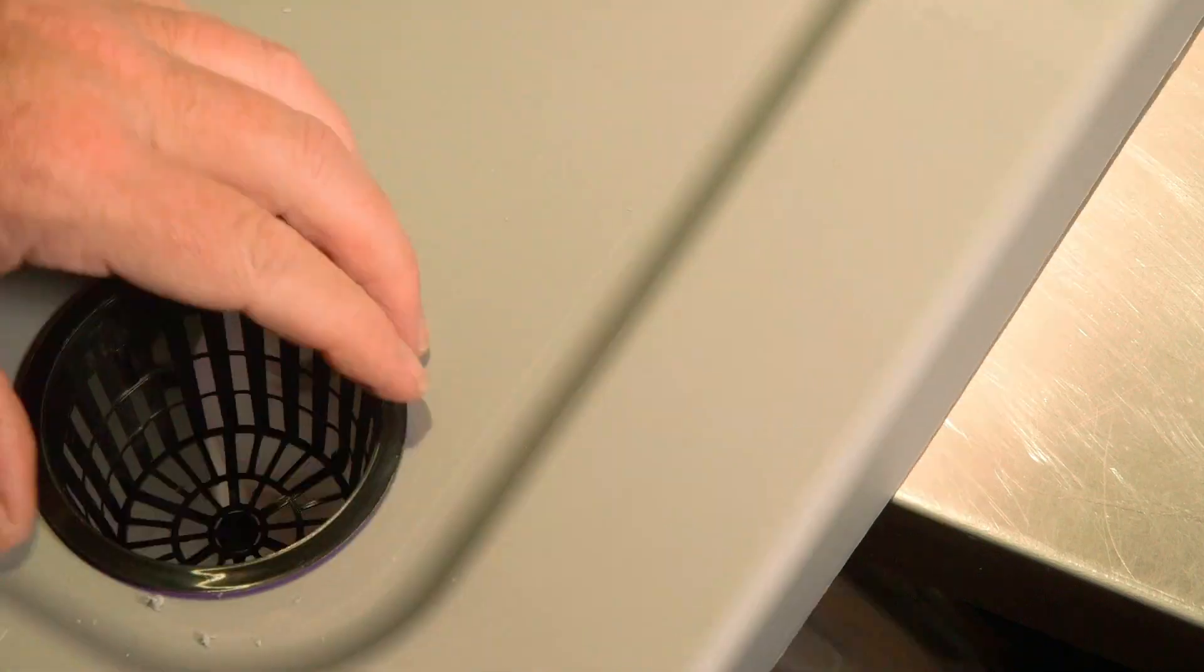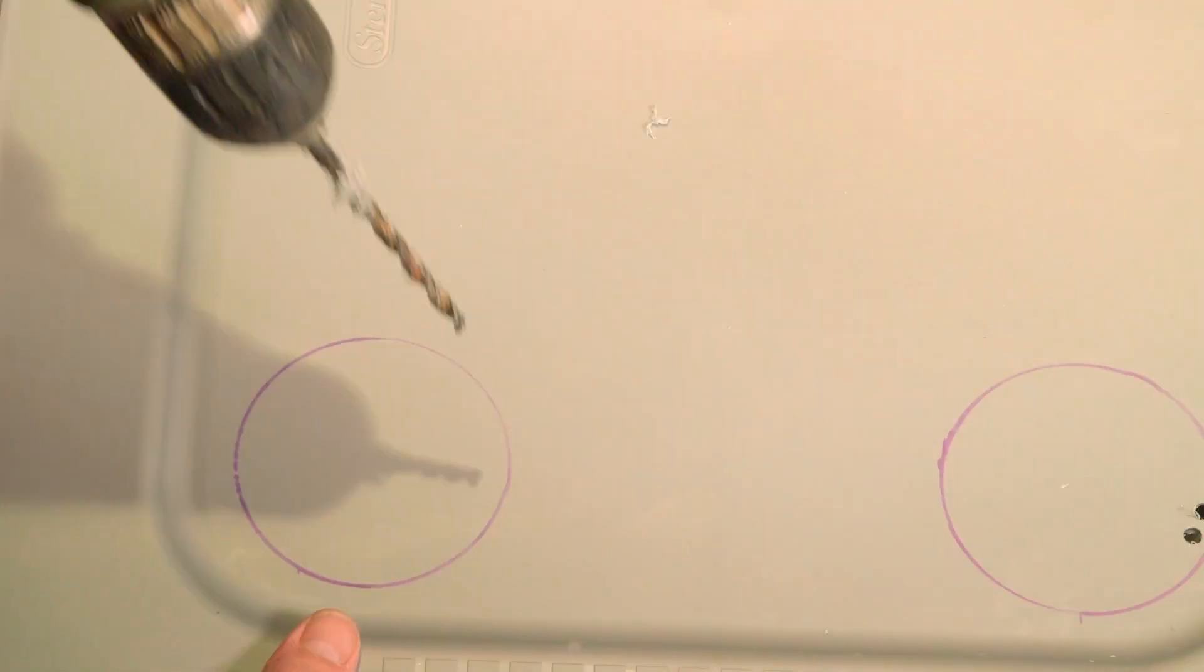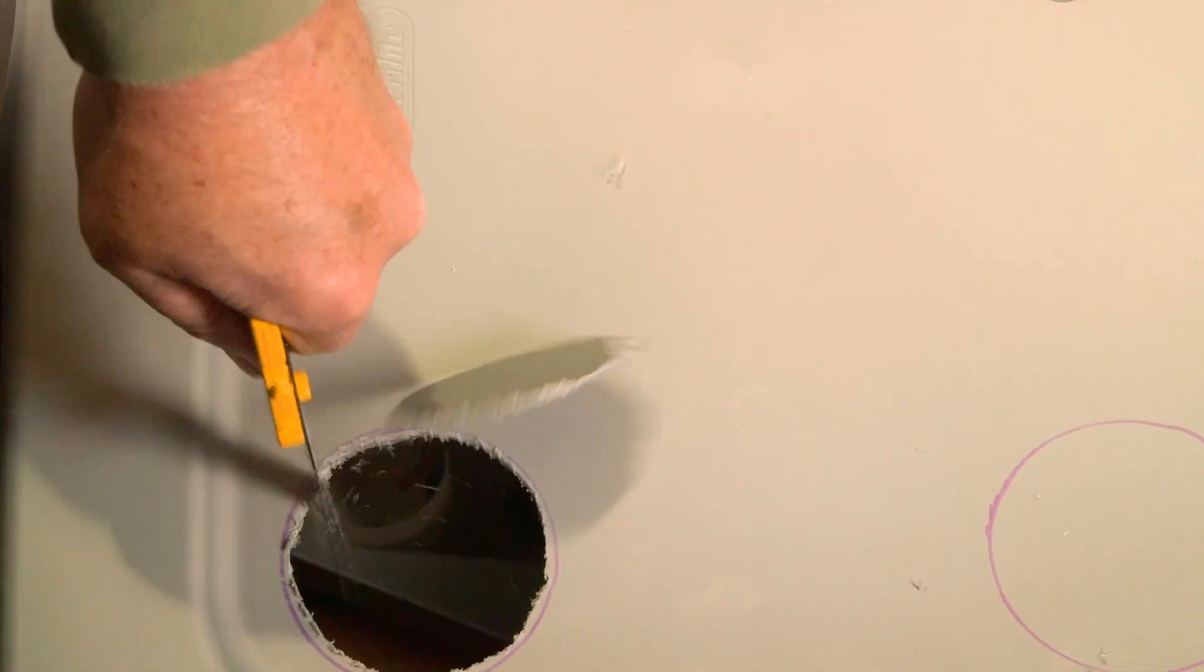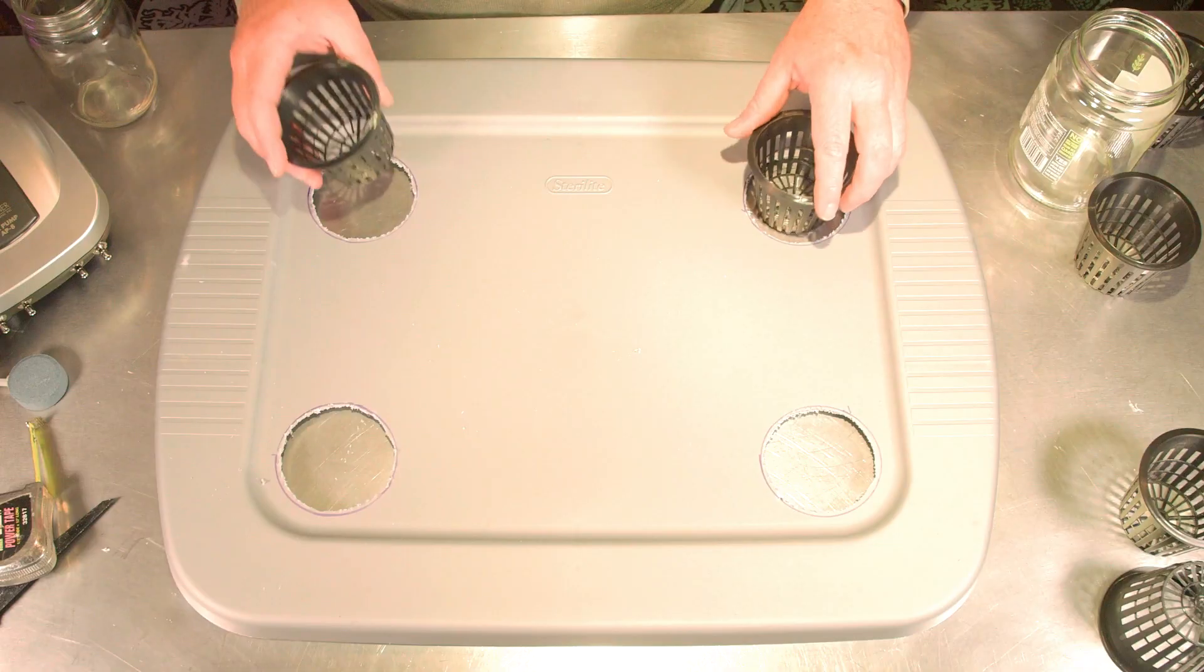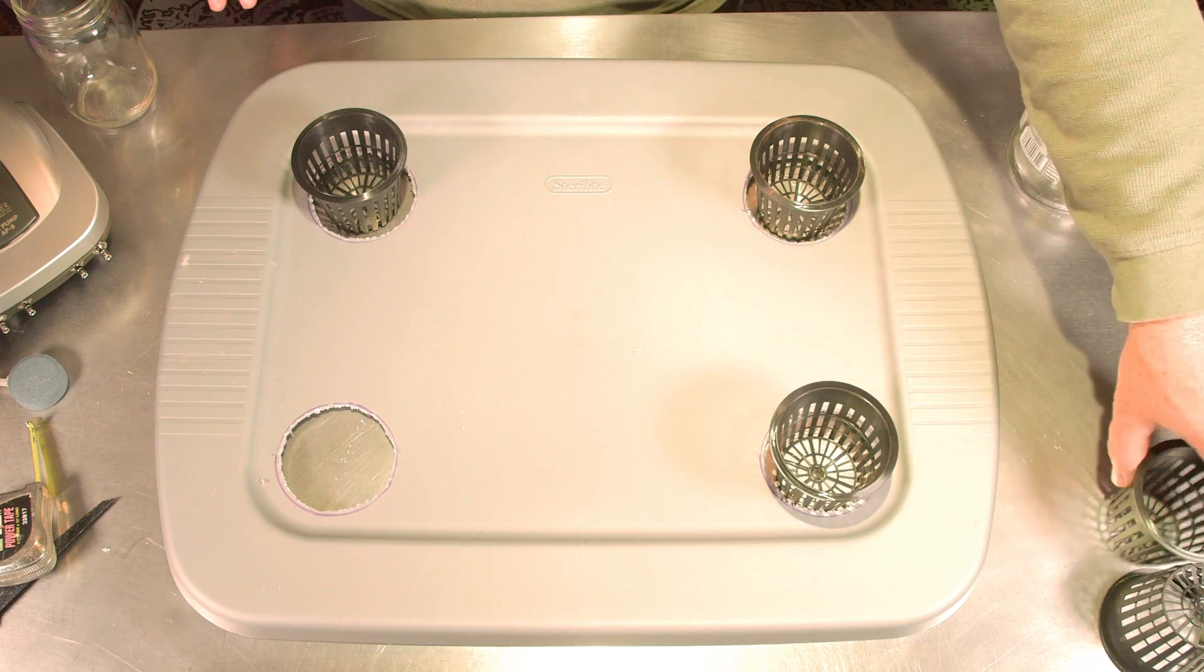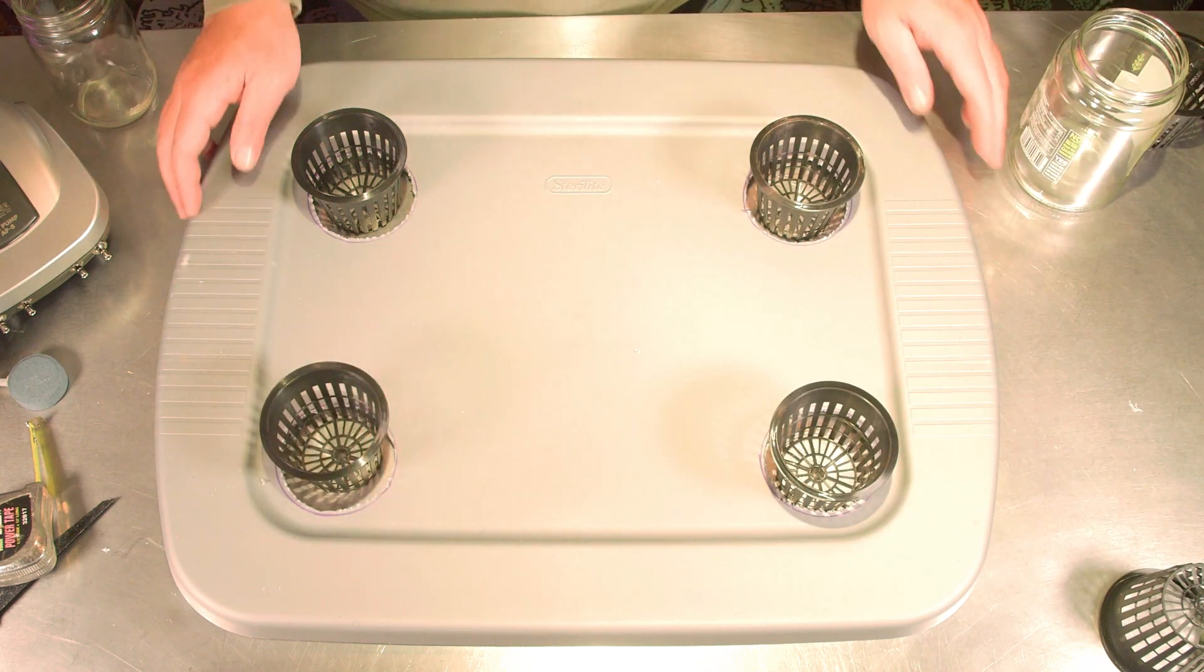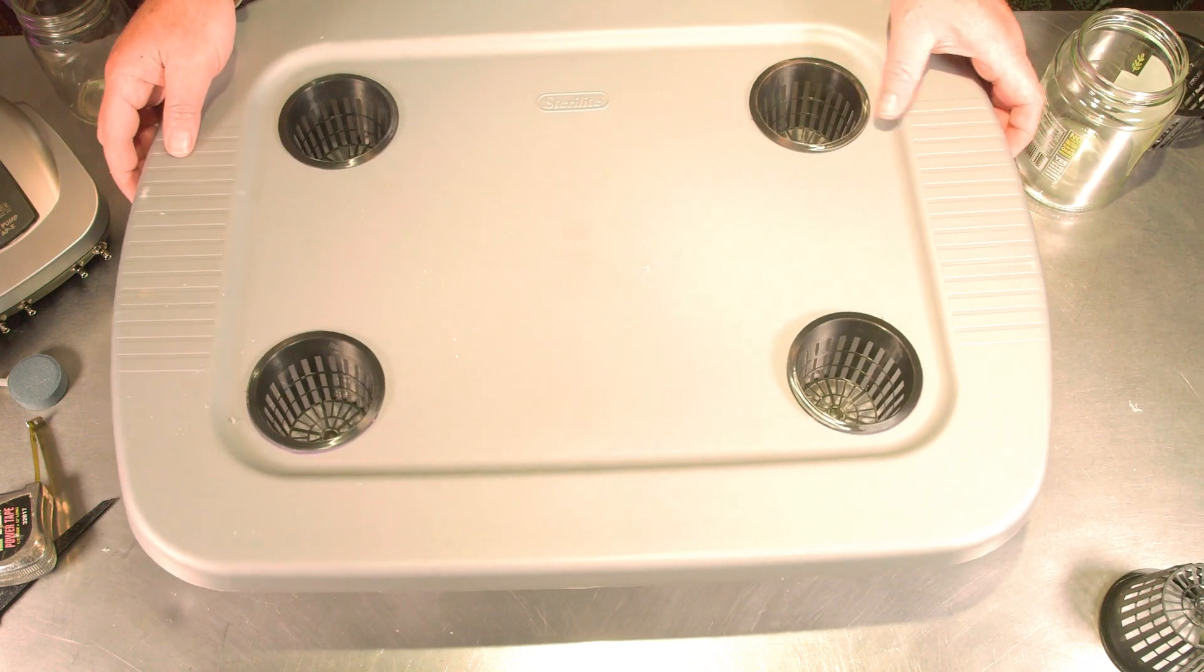The easiest way would be to pay 30 bucks for a hole saw for your drill, the right size. The cheaper way is to pay $10 for a keyhole saw and mark them yourself and just use a little elbow grease. Whichever way you decide, just make sure you get the holes the right size so that when you lift your pot up, they'll all fit right down in there. You don't want anything sliding through and ruining your plants.